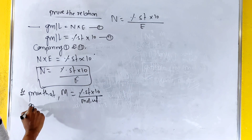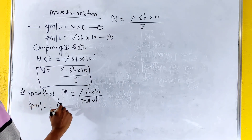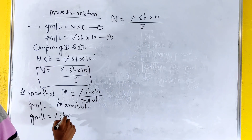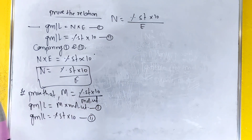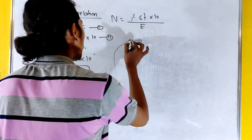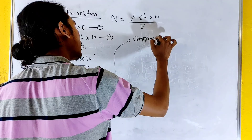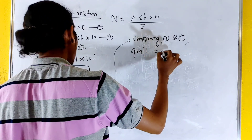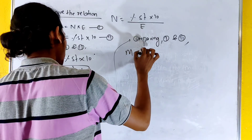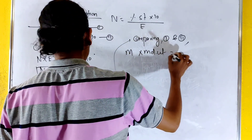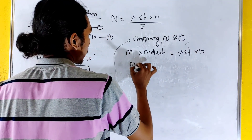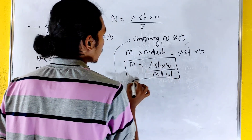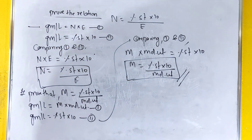To prove this, gram per liter equals molarity into molecular weight. Also, gram per liter equals percent strength into 10. Comparing equation 1 and equation 2, molarity into molecular weight equals percent strength into 10. So molarity equals percent strength into 10 divided by molecular weight. Hence proved.